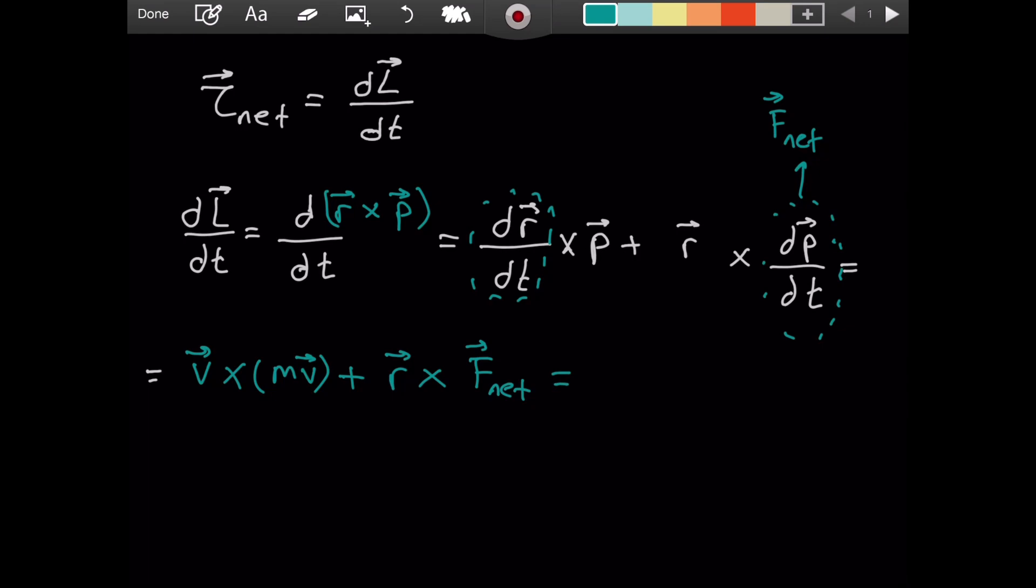Here, we will note an interesting thing about the first term. What does a cross product mean? In a cross product, you are interested in the component of a vector that is perpendicular to the other vector. So we have v and we have mv. These two are parallel. m is a scalar, it doesn't change the direction. So the velocity and the momentum vectors point in the same direction, meaning there is no perpendicular component.